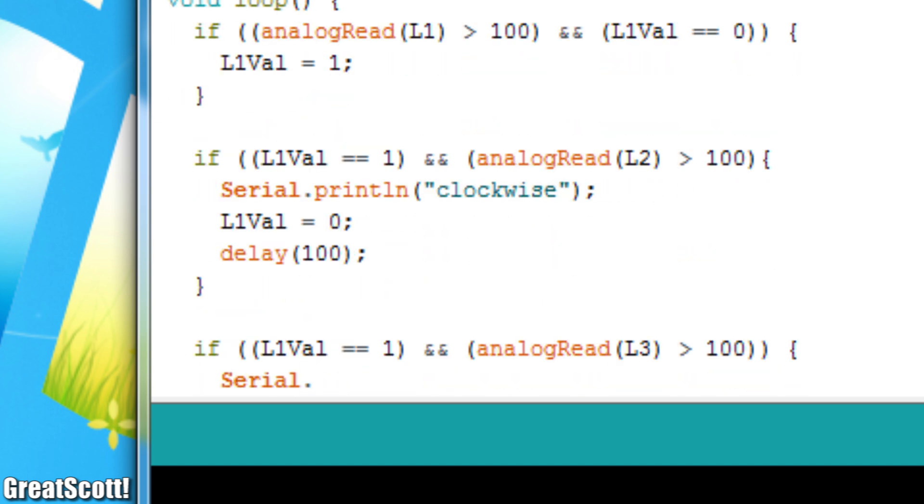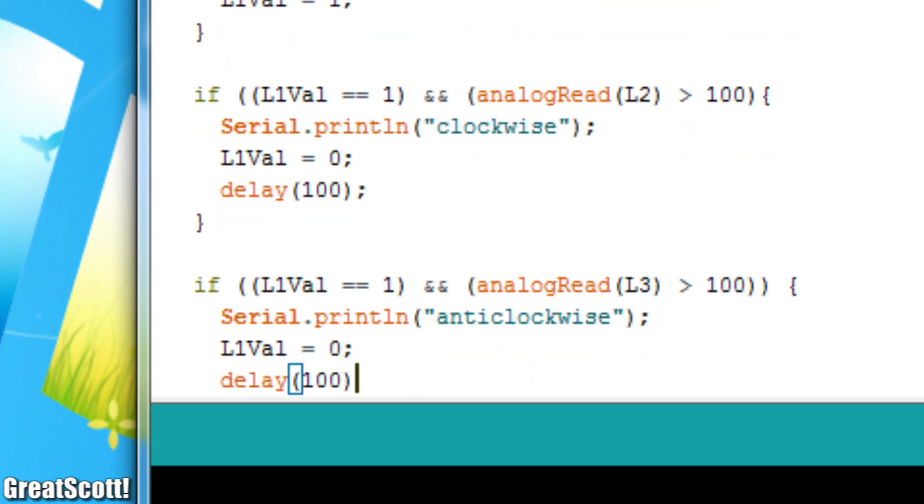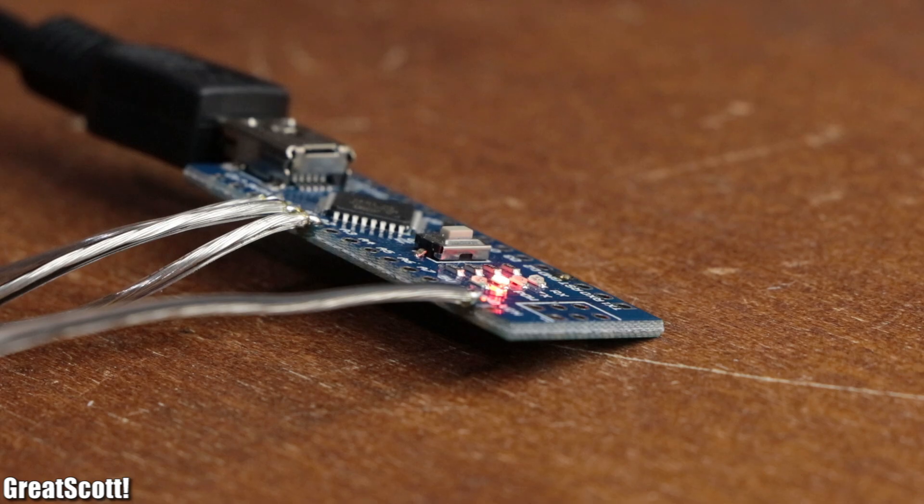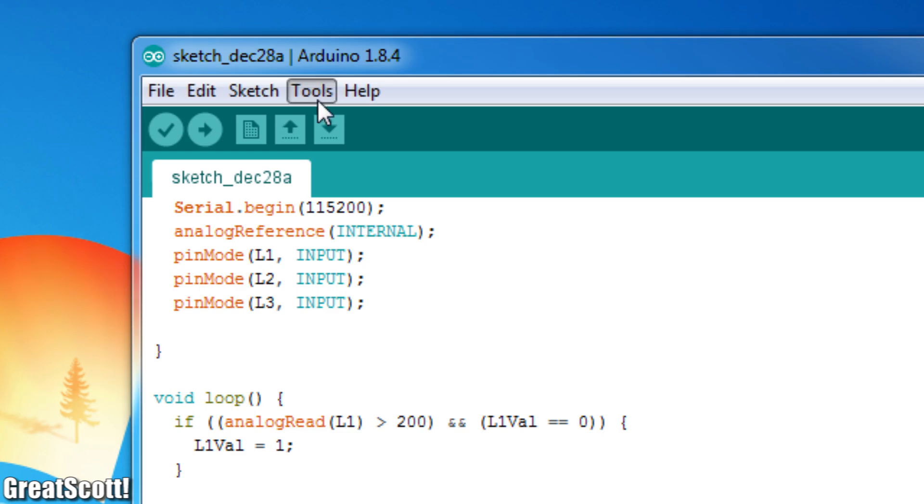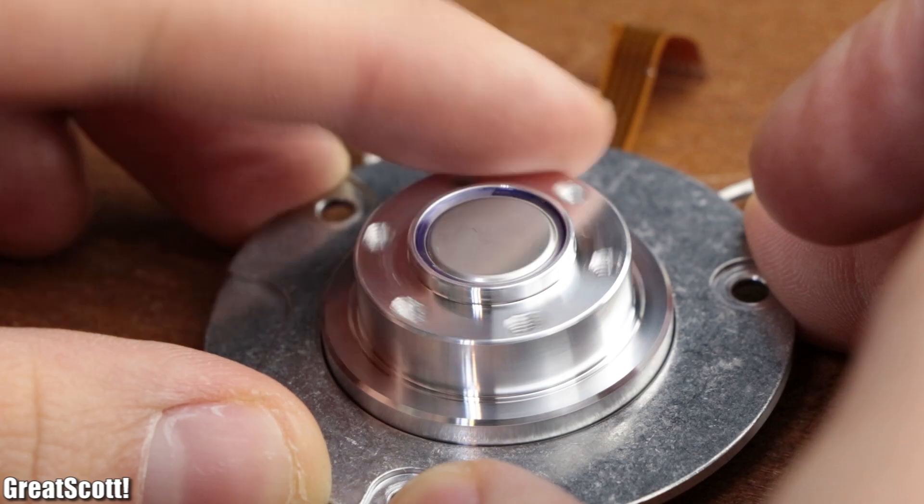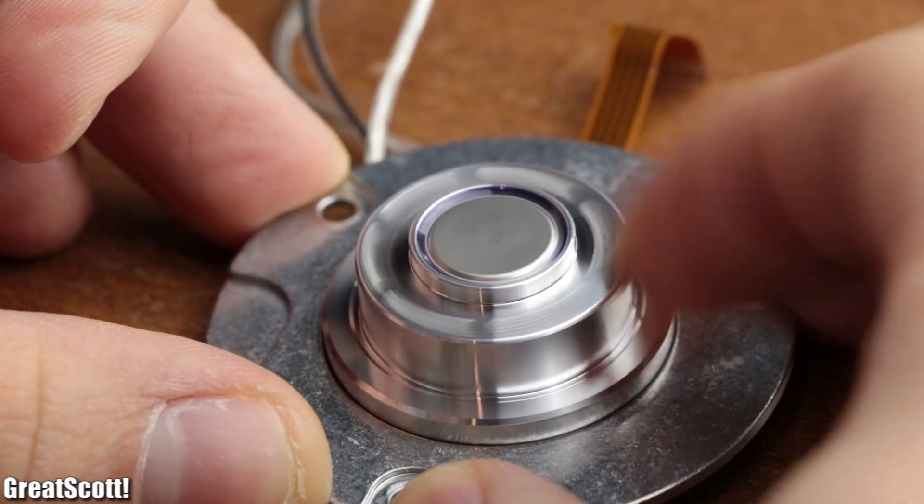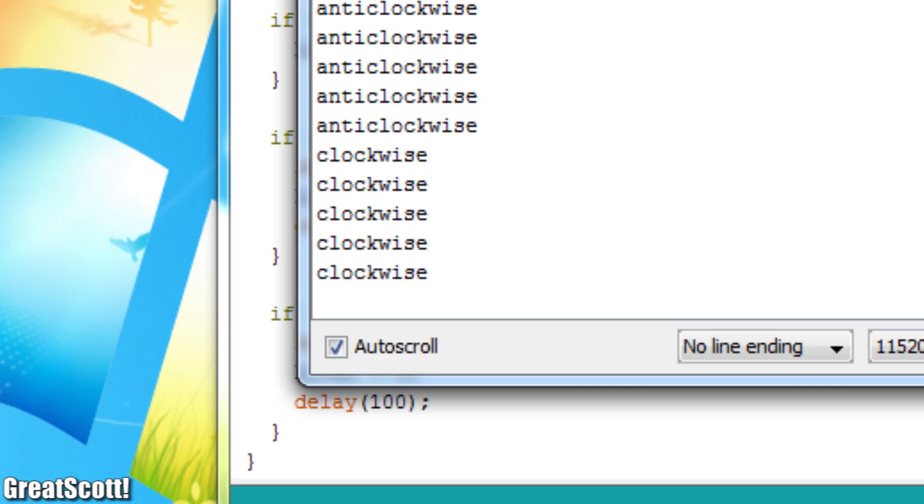Based on that, the serial monitor then outputs clockwise or anti-clockwise. And after uploading the code, opening the serial monitor and spinning the motor in both directions, it seems like everything worked just fine.